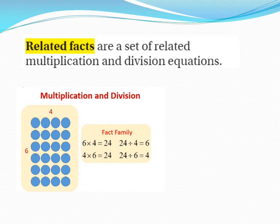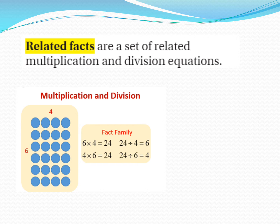Look at the following array. How many columns does it have? 4 columns. And how many rows does it have? 6 rows. Now let's write related facts using the following numbers: 6, 4, and 24. 6 multiplied by 4 equals 24. 4 multiplied by 6 equals 24. 24 divided by 4 equals 6, and 24 divided by 6 equals 4.